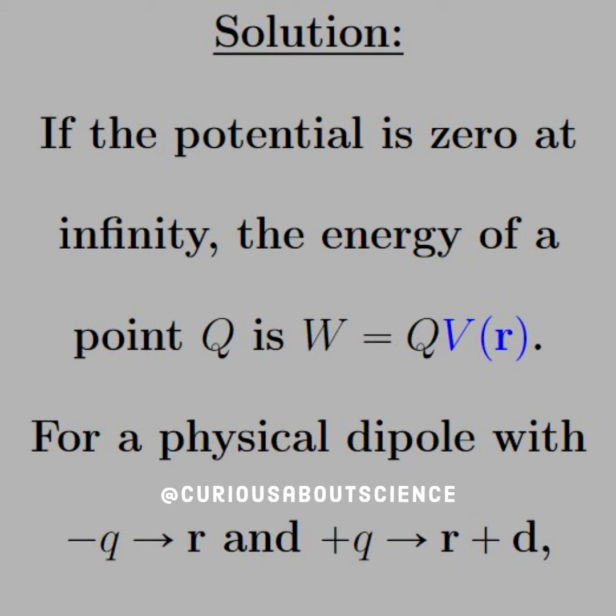All right, let's take a step back. Back in chapter two, when we discussed the work and energy in electrostatics, we found that the energy of a point Q was W equal QV, where V was the potential.